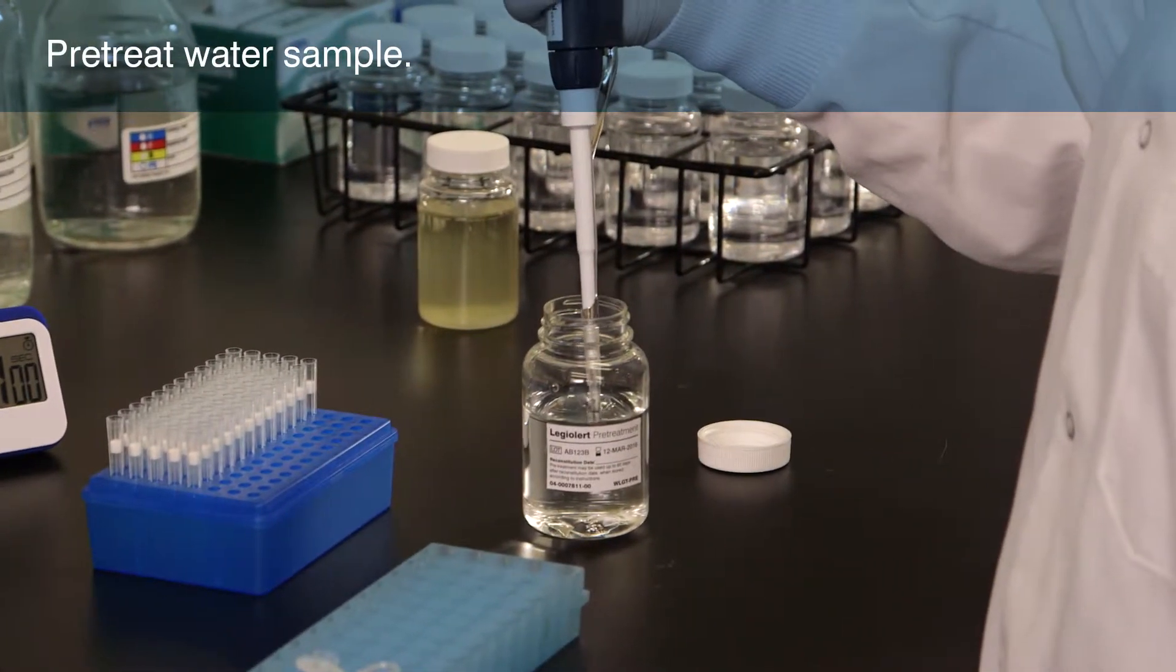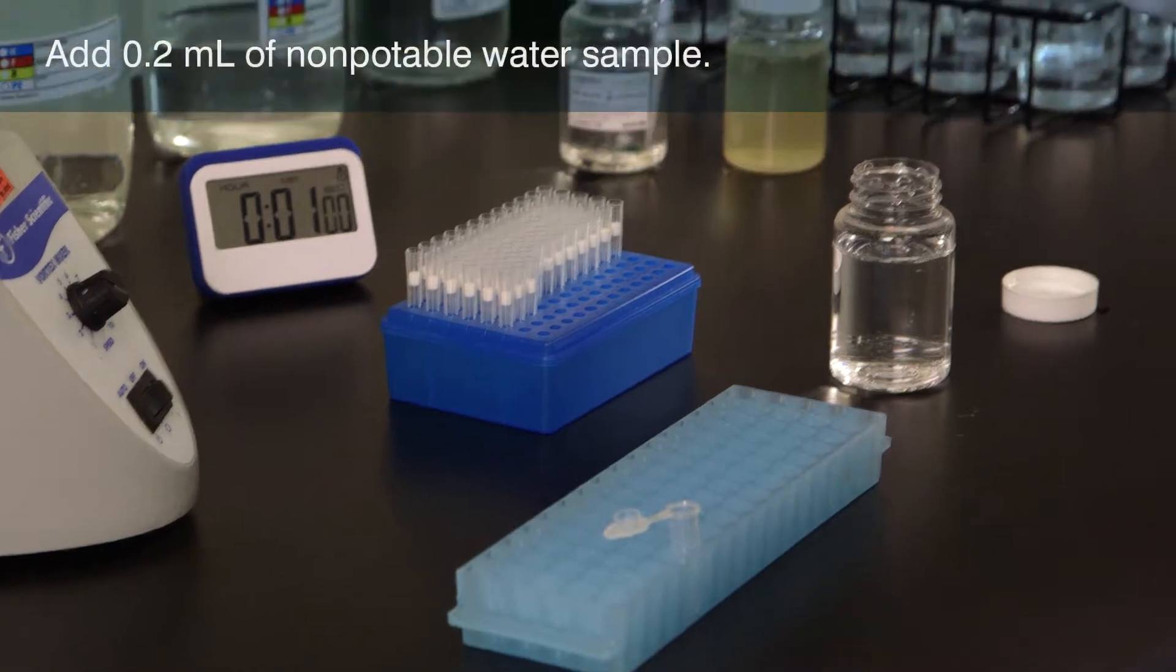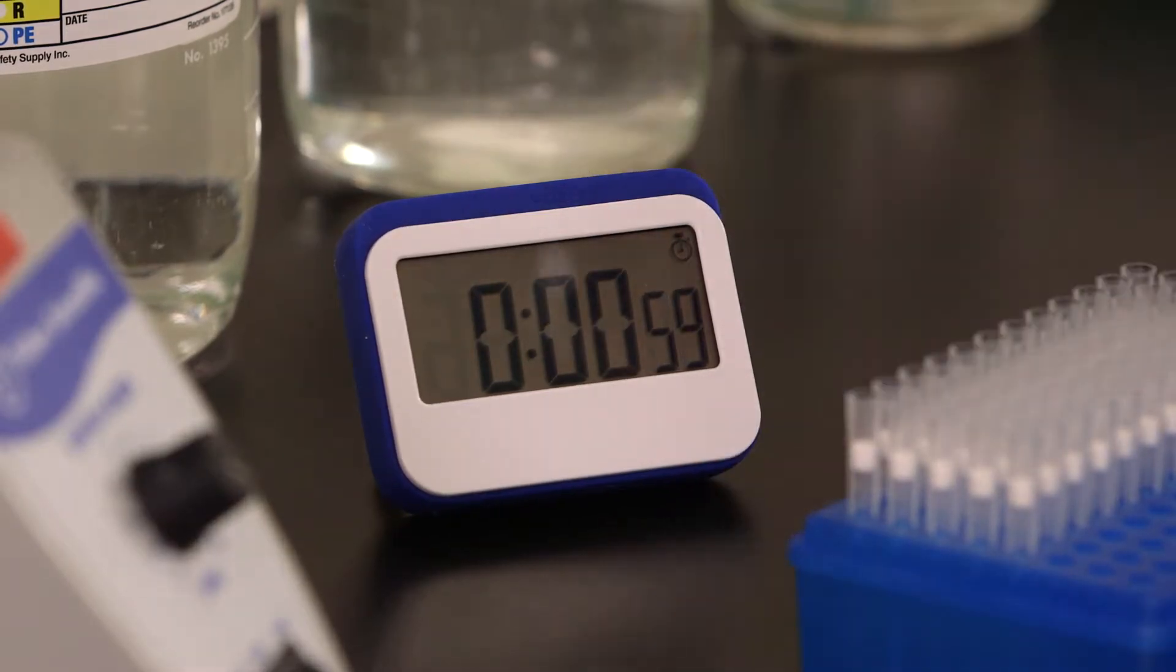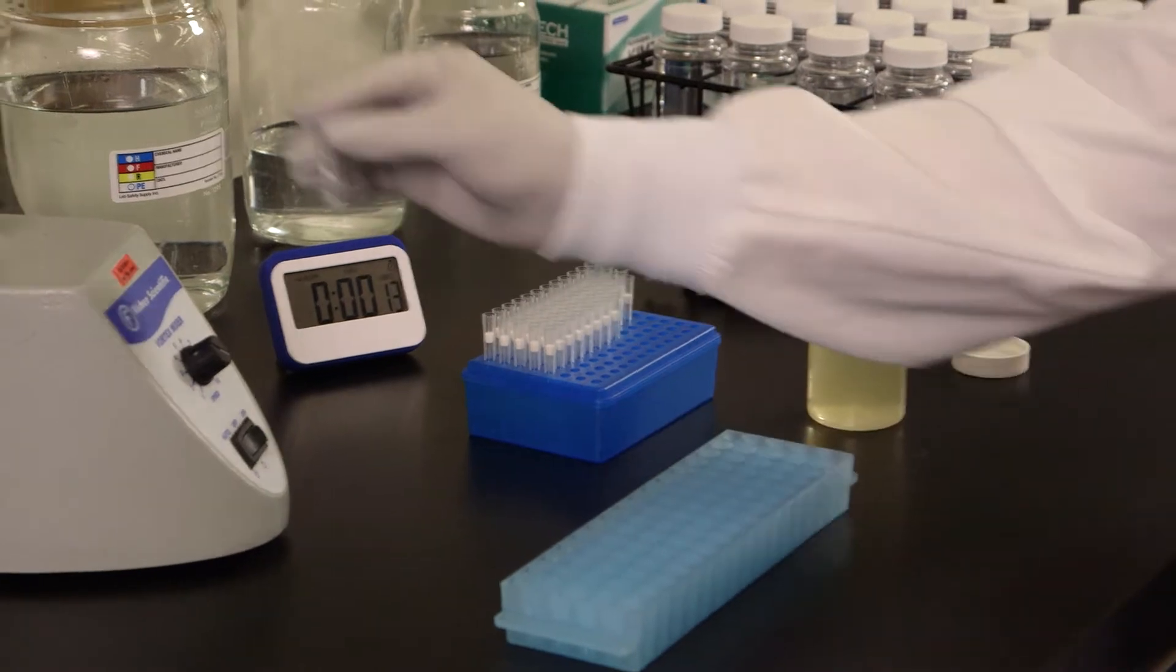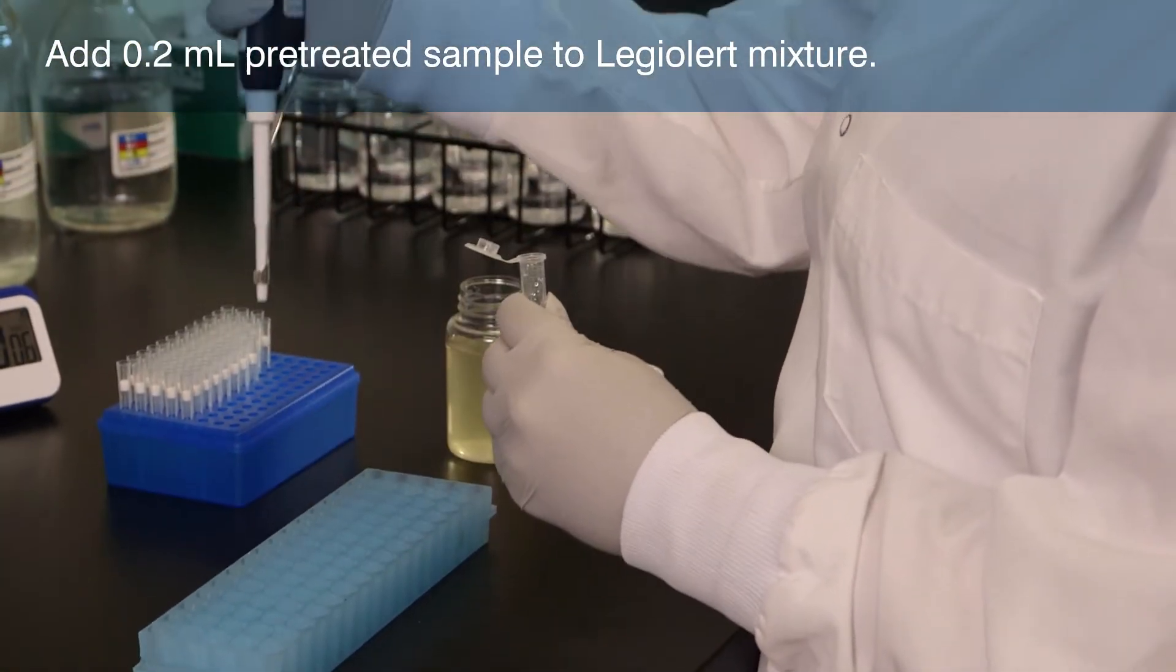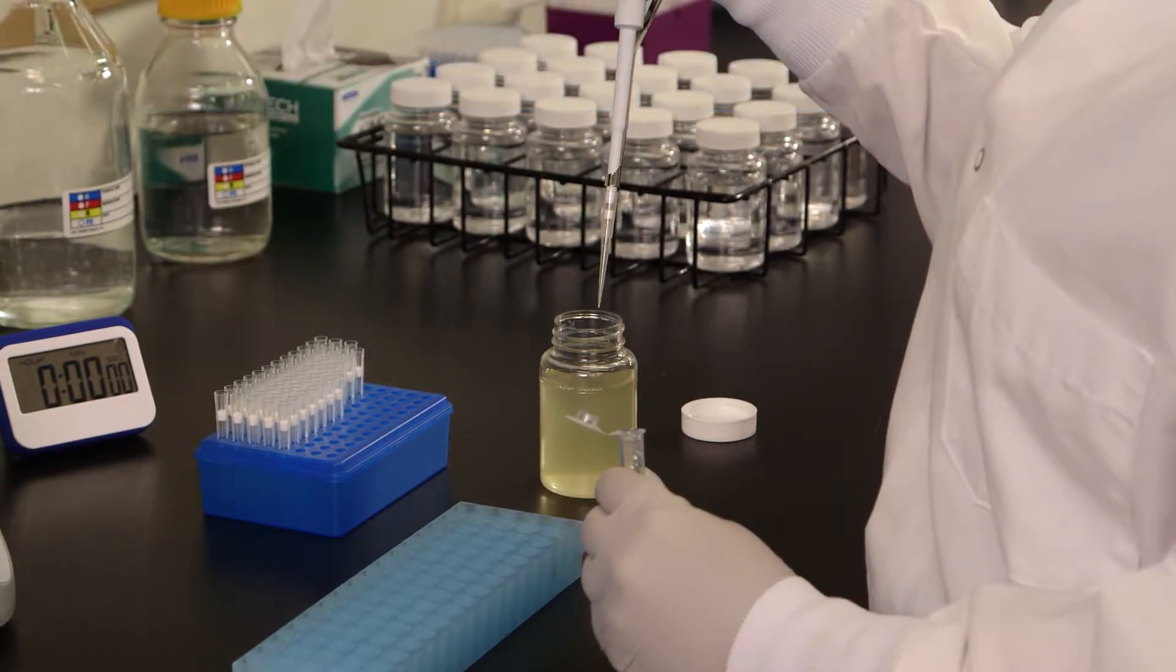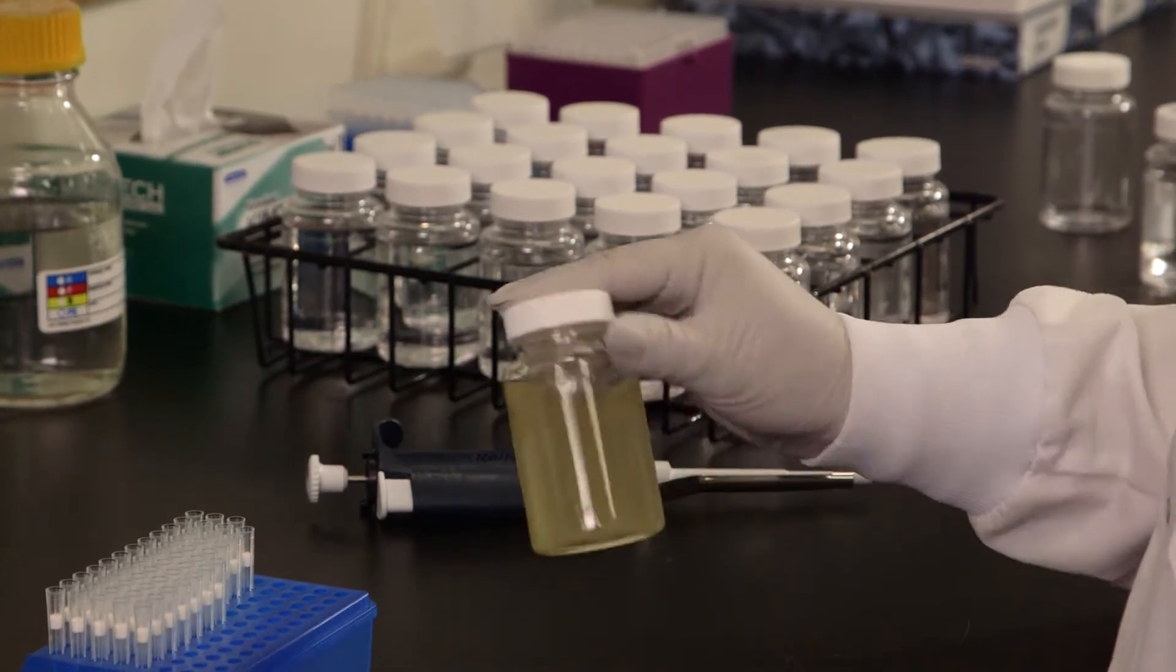Add 0.2 mL of reconstituted LEG-ALERT pre-treatment to a sterile microtube. Add 0.2 mL of non-potable water sample to the same microtube. Start a 1-minute timer and then mix the contents thoroughly. Mix again before the 1-minute is up. At 1 minute, immediately transfer 0.2 mL of the treated sample to the vessel containing the dissolved LEG-ALERT reagent. Cap the vessel and invert to mix the sample with the reagent. This non-potable water sample is now ready to be quantified.